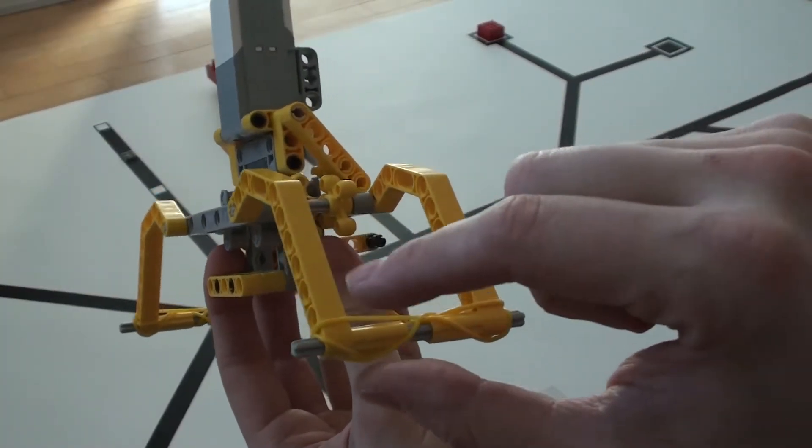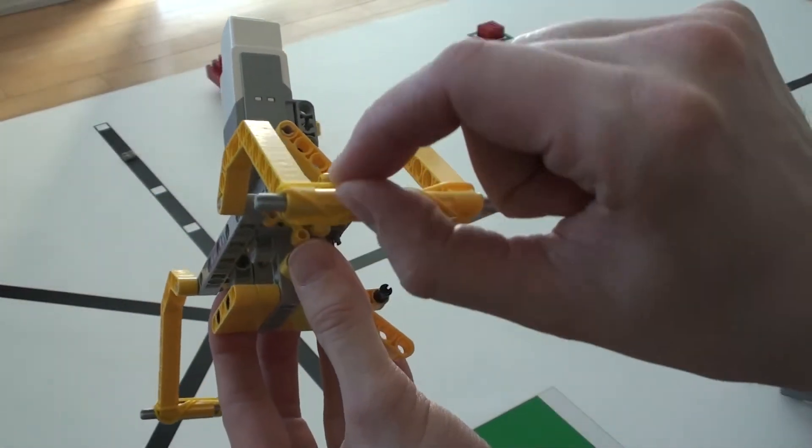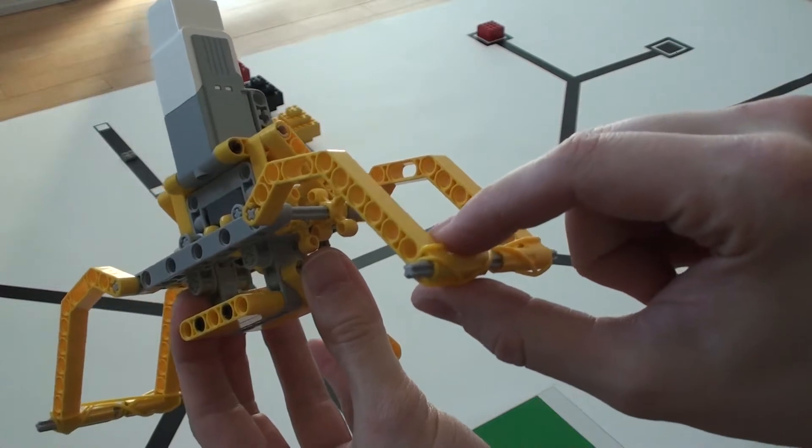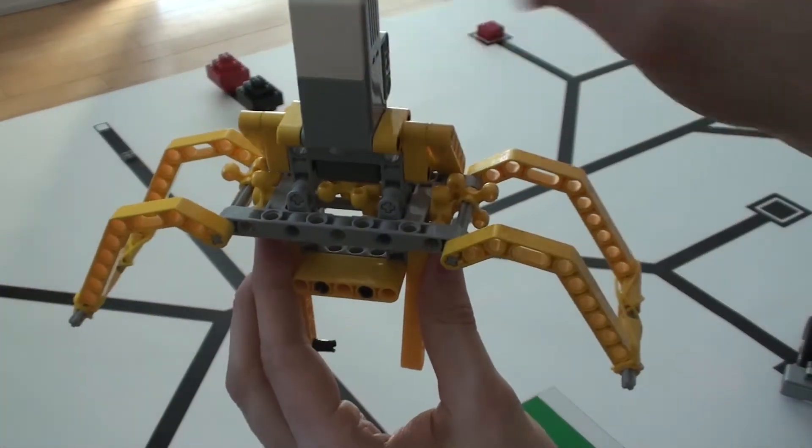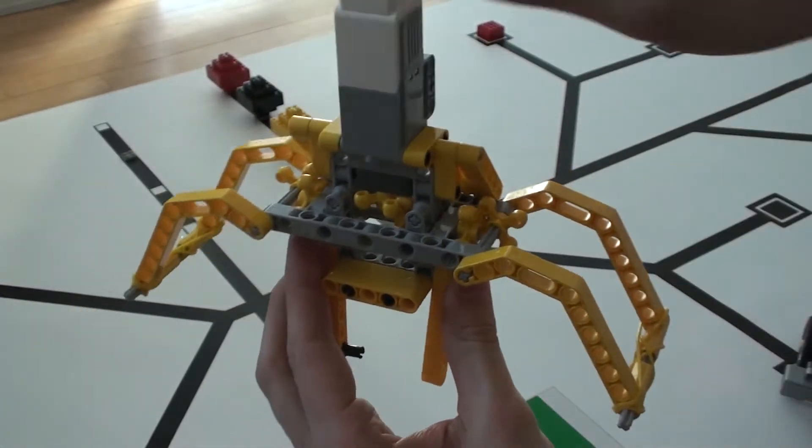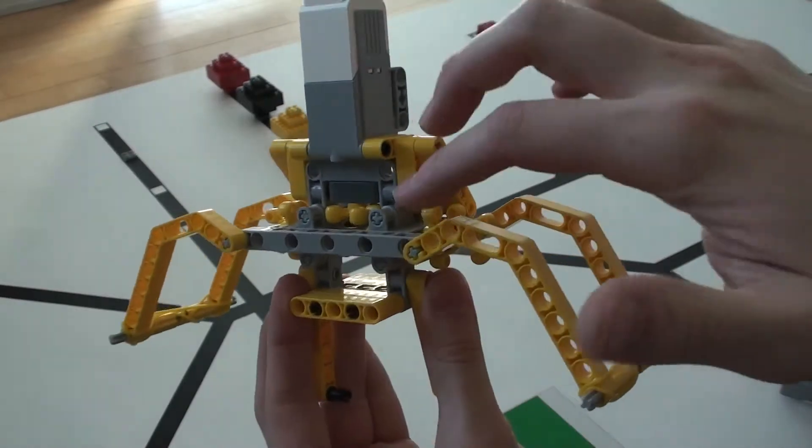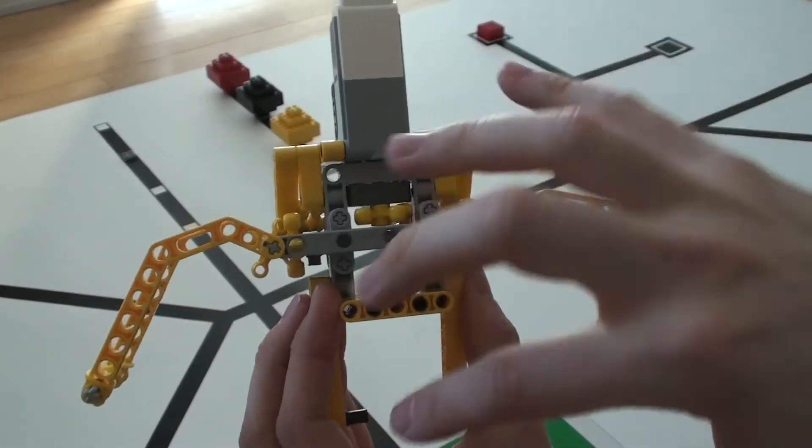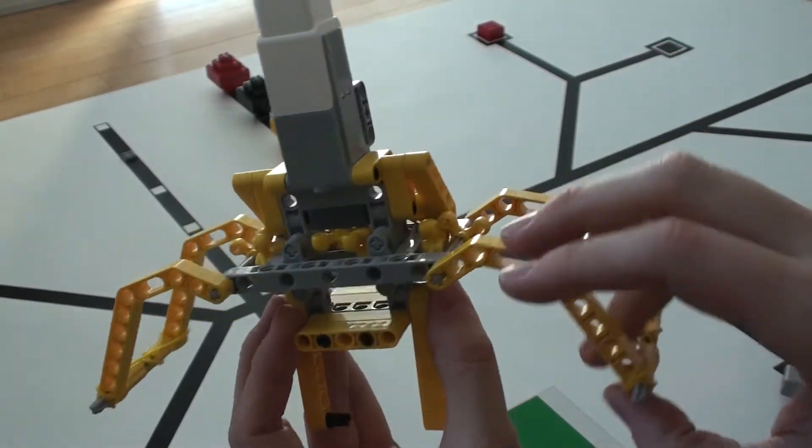For the grab it's important to add these silicone bands in order to add friction to the fingers. The building instructions for the grab are made in LEGO Digital Designer, which means the order of which the parts are added might not make sense at all.